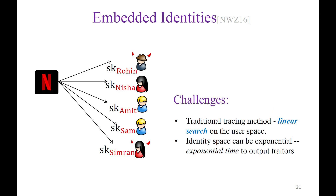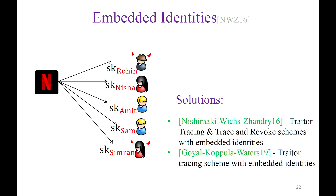Achieving embedded identities was particularly challenging. The traditional linear search method on the user space works for polynomial users, but the identity space could be exponential, making linear search exponential in time — which is undesirable. Multiple solutions were proposed: Nishimaki et al. introduced new tracing techniques and constructions of traitor tracing and trace-and-revoke schemes with embedded identities. Goyal, Coppola, and Waters proposed a different tracing technique and showed a traitor tracing scheme with embedded identities.